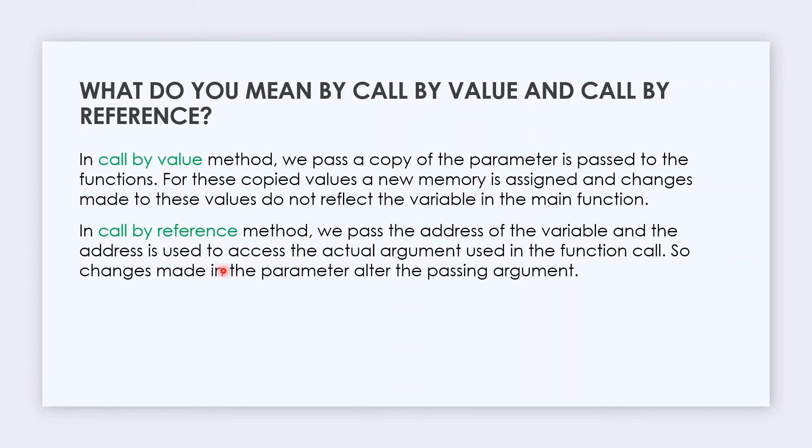In call by reference method, we pass the address of the variable and the address is used to access the actual argument using the function call. Changes made in the parameter alter the passing argument. In reference we actually send that variable, but in value we send a copy. So if we change the value in call by value method it's not reflected, but if it's call by reference, changes made in the parameter alter the passing argument.